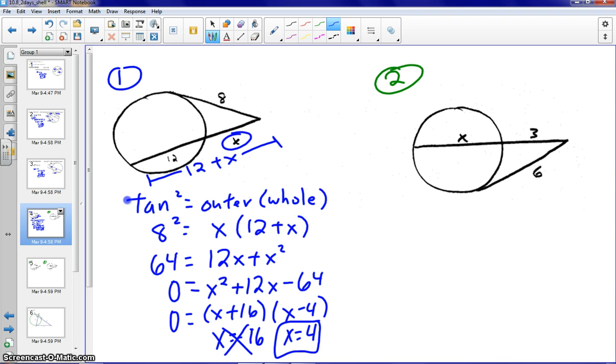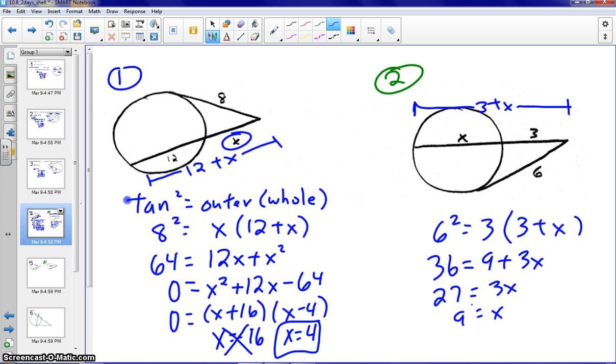Second example, this is a good one to maybe pause and go ahead and try. It's an example of another tangent-secant. So pause it, try it on your own, and then push play again and check to see how you did. Again, this would be tangent-squared equals outer times whole. So again, our whole secant would be 3 plus X. And as we solve, we would find out that X is equivalent to 9.